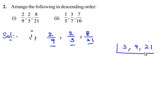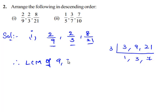Since 3 is a common factor of 3, 9, and 21, we first consider the prime factor 3. So 3 goes into 3 one time, 3 goes into 9 three times, and 3 goes into 21 seven times. Therefore the LCM of 9, 3, and 21 is equal to 3 times 3 times 7, which is equal to 63.